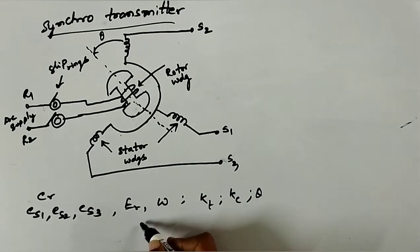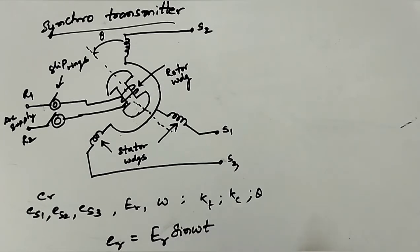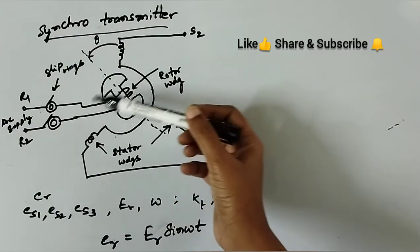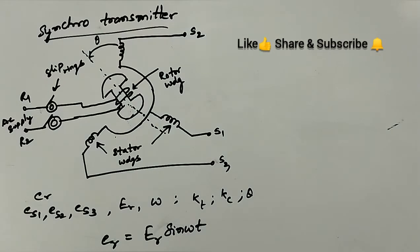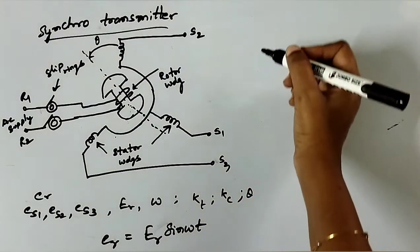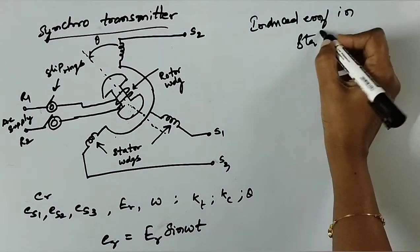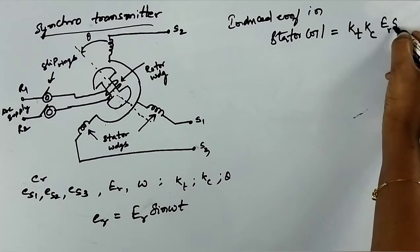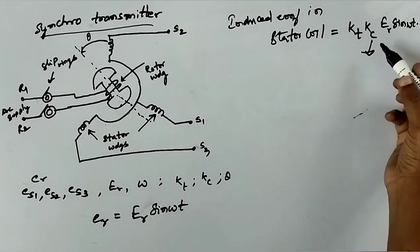The instantaneous value of excitation voltage ER is equal to ER_max × sin(ωt). When the rotor rotates in an anticlockwise direction by an angle theta, EMFs are induced in the stator coils, and the frequency of the induced EMF is the same as the rotor frequency. The induced EMF in the stator coil equals KT × KC × ER × sin(ωt), where KC is a function of the rotor angular position.